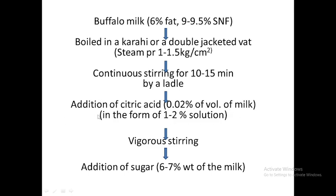An important point: when we add citric acid, we do not find any coagulation, although we are adding an acid. This is because the amount of acid added is very less, so no visible change takes place. You will not be able to differentiate whether the milk has been treated with citric acid or not. However, we will observe the change in later stages — at the point when concentration and consistency change, the proteins become insoluble and the grains are quite larger.